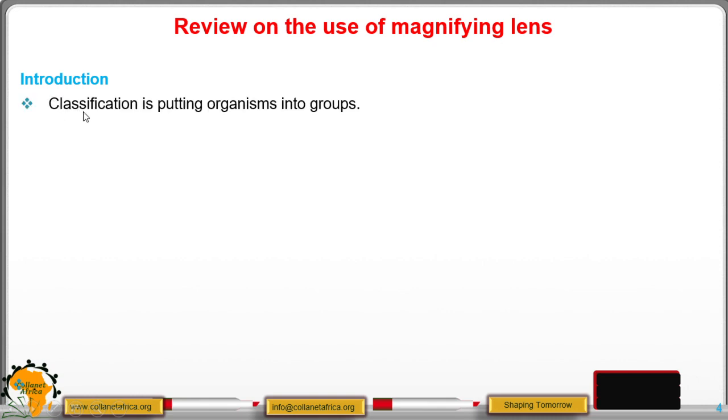We shall begin with definition of the term classification. Classification simply means putting organisms into groups. The terms used alongside classification include organizing, sorting, and ordering, among others.